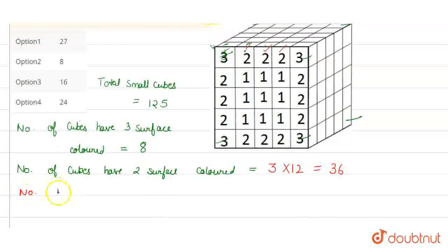Then we find the number of cubes that have 1 surface colored. These are on the faces. On each face, there are 9 cubes: 1, 2, 3, 4, 5, 6, 7, 8, 9. So there are 9 cubes with only 1 surface colored. A cube has 6 faces, so we multiply this with 6, which equals 54. There are 54 cubes that have only 1 surface colored.